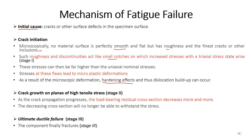Crack propagation leads to plastic deformation, which in turn reduces the cross-sectional area available to sustain the load. The decreasing cross-sectional area can no longer withstand the stress, leading to ultimate ductile failure over a long period of time. Initially, roughness and discontinuities cause crack nucleation and initiation; after crack growth, microplastic deformation turns into macroplastic deformation, leading to component failure.